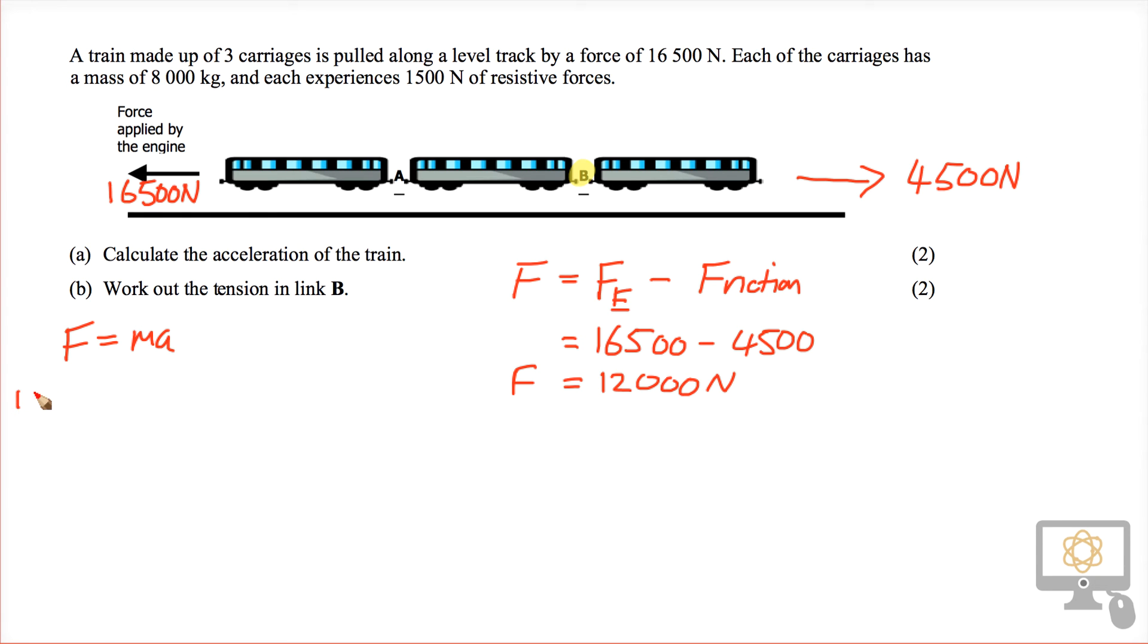The unbalanced force of 12,000 is equal to its mass, which is 8,000 times three because there are three carriages, so 24,000, times the acceleration.